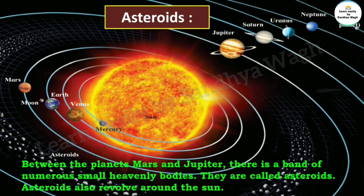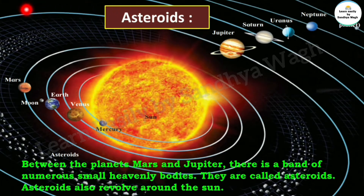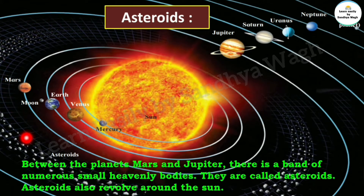Between Mars and Jupiter there is a band of numerous small heavenly bodies called asteroids. Asteroids also revolve around the sun. This is Mars's orbit and Jupiter's orbit, and in between these two planets there are many small heavenly bodies — this band is the asteroid belt.